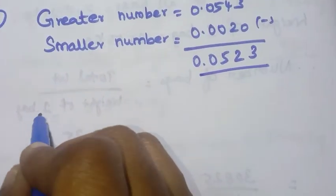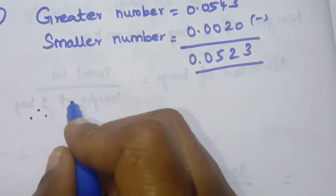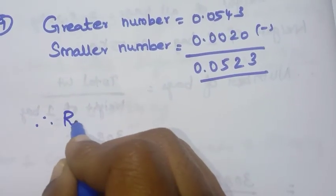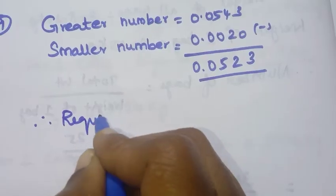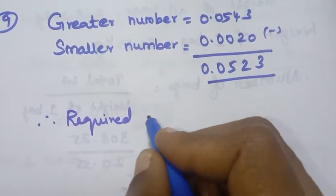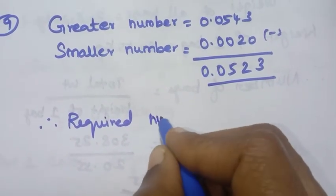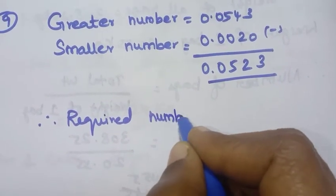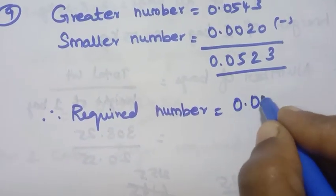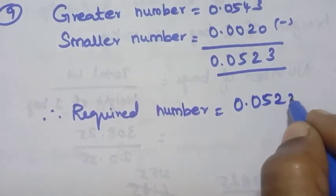Therefore the required number — how much 0.0543 is greater than 0.002 — is 0.0523.